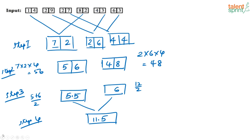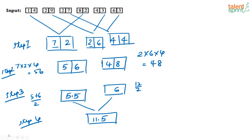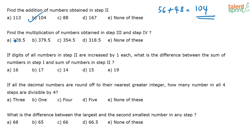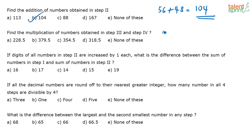Remember: in the question, they label each row as Step 1, 2, 3, 4 — keep that in mind to avoid confusion. The next question asks for the multiplication of the numbers from Step 3 and Step 4: 5.5 × 6 × 11.5 = 379.5. The correct answer is again option B.